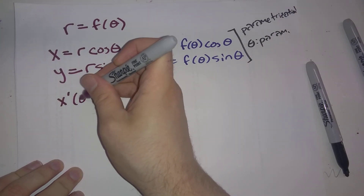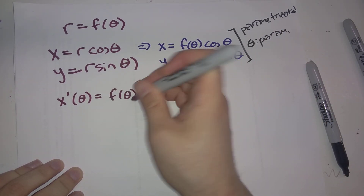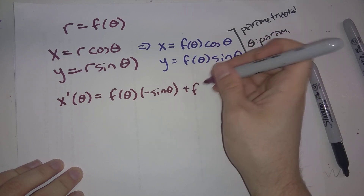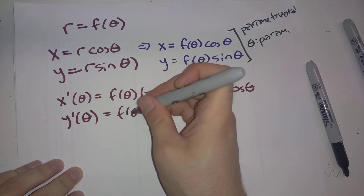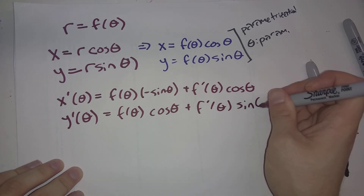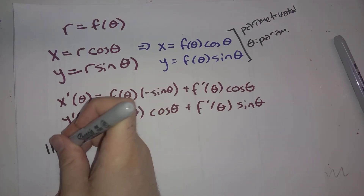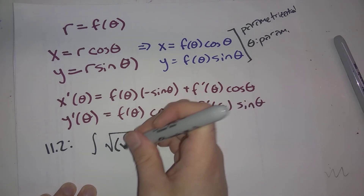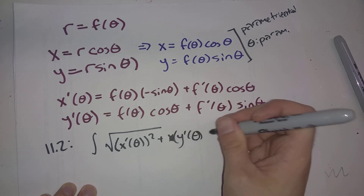Let's take some derivatives. x'(θ), using the product rule, is f(θ)·(−sin θ) + f'(θ)·cos θ. And y'(θ) is f(θ)·cos θ + f'(θ)·sin θ. Going back to section 11.2, the arc length integral we are looking at is the integral of the square root of x'(θ)² + y'(θ)².